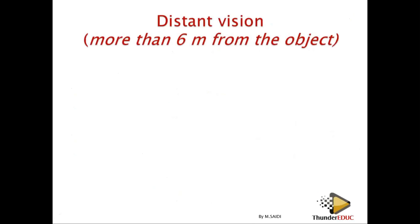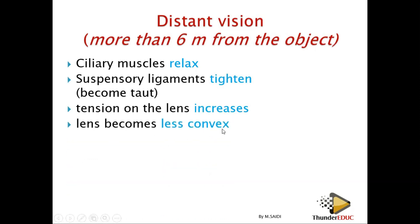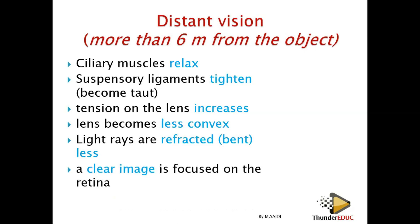For distant objects — more than six meters away — it is just the opposite of near vision. The ciliary muscles relax, the suspensory ligaments become tightened and taut, the tension on the lens increases, and the lens becomes less convex. Because the lens is less convex, light rays are refracted less, and a clear image is still focused onto the retina.